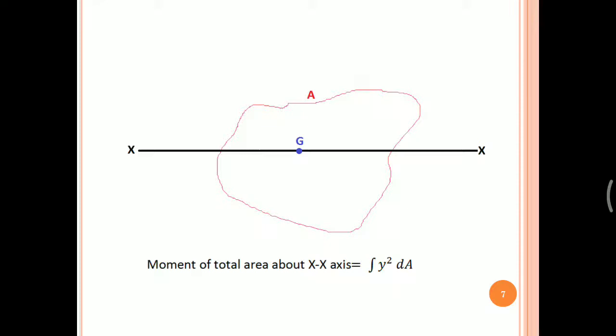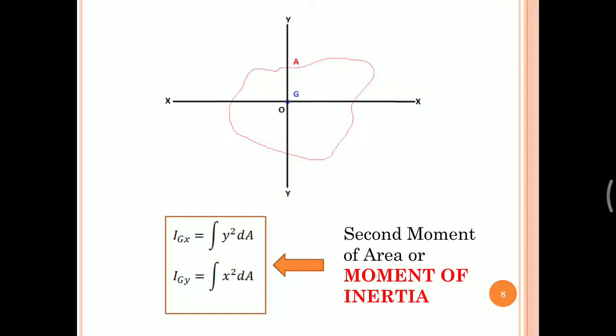Please note that the second moment of area is also known as moment of inertia, which is very important in solid mechanics. The moment of inertia about the x-axis is obtained using integral y² dA, and in the figure it is written as Igx. Igx means the moment of inertia of an area about axis x that passes through G. So Igx = integral y² dA.